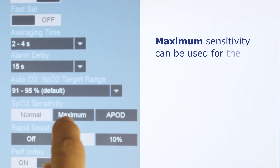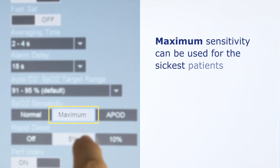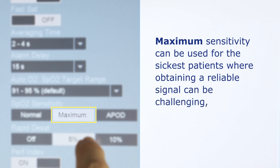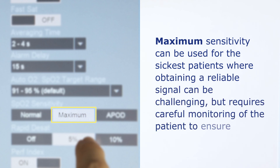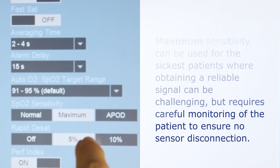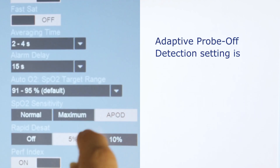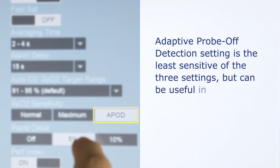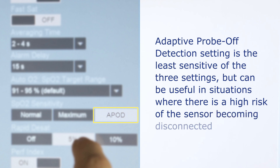Maximum sensitivity can be used for the sickest patients where obtaining a reliable signal can be challenging, but requires careful monitoring of the patient to ensure no sensor disconnection. Adaptive probe off detection setting is the least sensitive of the three settings, but can be useful in situations where there is a high risk of the sensor becoming disconnected from the patient.